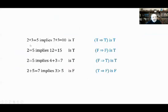Here are some implication examples. '2 plus 3 equals 5 implies 7 plus 3 equals 10' — true implies true, so it's true. '2 equals 5 implies 12 equals 15' — false implies false, which is true. '2 equals 5 implies 4 plus 3 equals 7' — false implies true, which is true. But '2 plus 5 equals 7 implies 3 greater than 5' — true implies false, which is false.